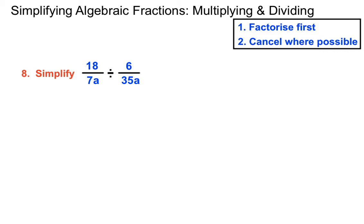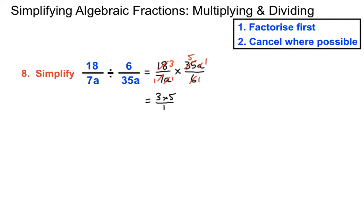This one involves dividing by a fraction. Remember the rule: when you divide by a fraction you multiply by the second fraction turned upside down — you multiply by the reciprocal. So 18 over 7a stays normal, then we turn it into a multiply and reciprocate the second fraction. There are no factorising opportunities here, so: 6 goes into itself once and into 18 three times; 7 goes into itself and into 35 five times; a cancels. We're left with 3 times 5 on top, giving us 15.